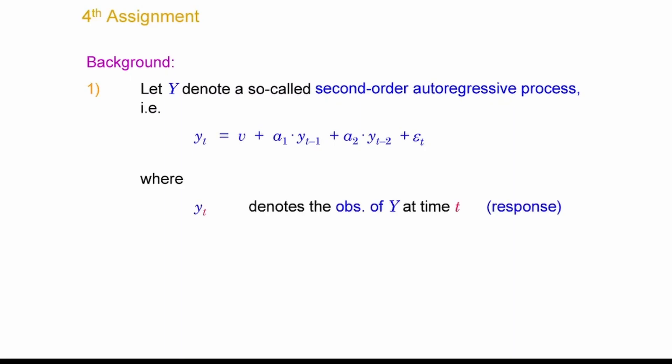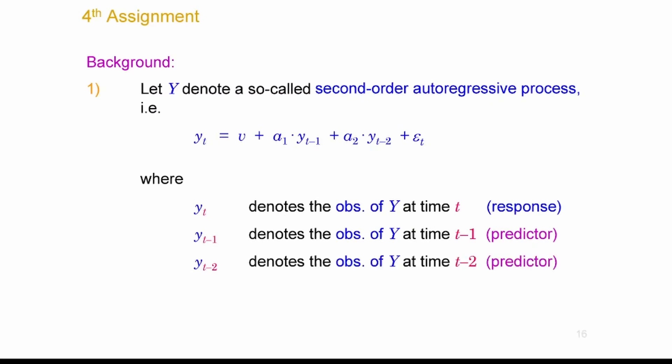In the multiple regression, there is one explanatory variable yt minus 1, which is the observation at time point t minus 1 — the previous observation. And yt minus 2 is the observation at time point t minus 2. So you have two explanatory variables having a direct impact on a current observation. This is a second-order autoregressive process because you go back two steps in time.